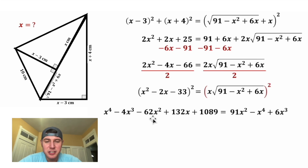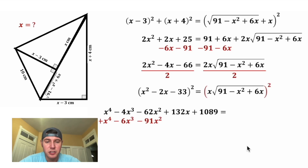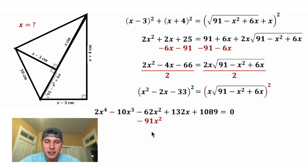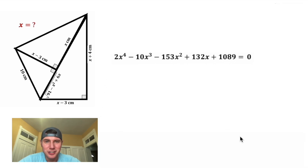For the next step, I want to set our polynomial equal to 0, so let's take everything from the right-hand side and subtract it. On the right-hand side everything cancels, leaving 0. On the left-hand side: x to the 4th plus x to the 4th is 2x to the 4th, negative 4 minus 6 gives negative 10, and negative 62 minus 91 gives negative 153. Now we have a polynomial equal to 0.